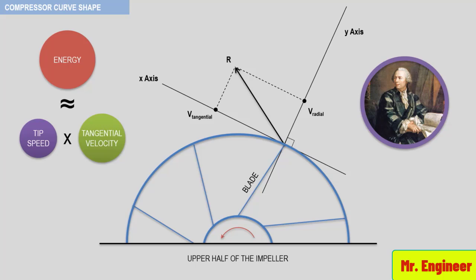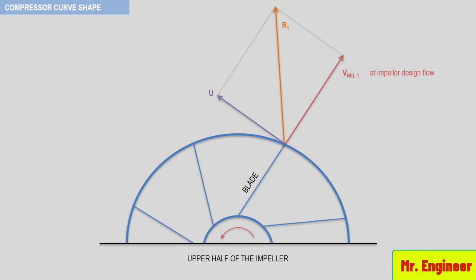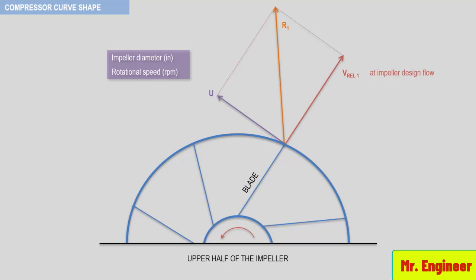Let's now assume that the head required by the process changes such that the flow through the impeller reduces. Examining the discharge velocity at this reduced flow condition: assuming rotor speed is constant, the tip speed value does not change, since tip speed is a function of impeller diameter and shaft speed. However, the velocity relative to the blades will be reduced as a result of a lower volume flow passing through a fixed area, resulting in a lower velocity relative to the blade at the discharge.